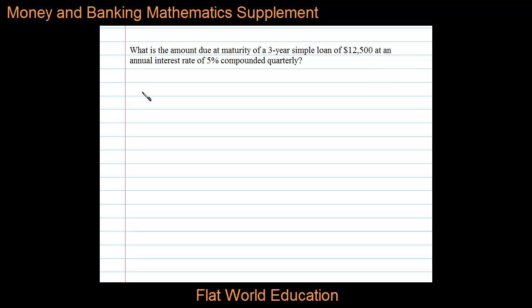We can find that amount using the future value formula. The future value is equal to the present value times 1 plus i to the n power, where i is the interest rate per period and n is the number of periods.